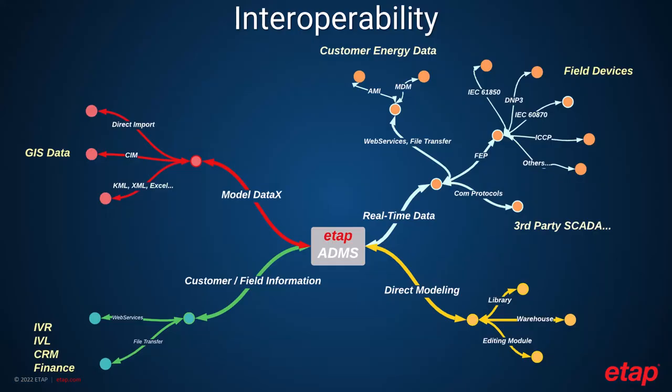Interoperability is one of the challenges that most ADMS systems face. The information centralized in the digital twin is diverse — from real-time data to technical information to enterprise management data such as CRM, billing, IVRs, and more. We have prepared the ADMS system to overcome this challenge by providing a large library of communication protocols that allows us to communicate to third-party SCADA or go directly to field devices using IEC 61850, DNP3, IEC 60870, HCCP, and many other protocols.